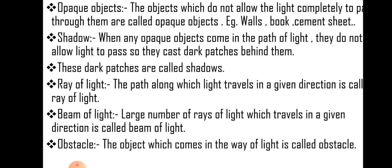Obstacle: the object which comes in way of the light is called obstacle, or we can say the object which we keep in the path of light because of which the shadow is formed are called obstacles.